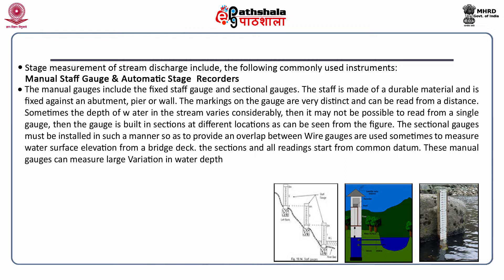Rivers have tremendous variation in flow — in summer the flow is different, in monsoon it is different, and in winter it is different again. Many streams show this kind of variation, which is why we have this manual stage recorder with three gauges in stages.